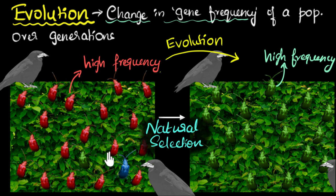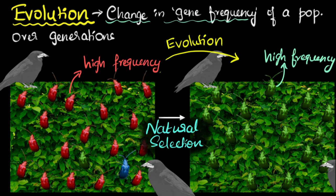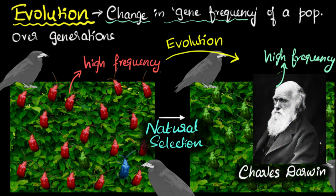It's called natural selection because this happened naturally. The moment you have an advantage, naturally you will end up creating more copies of yourself and increasing in number. So what you're seeing here is evolution by natural selection. This idea of natural selection was first proposed by a man called Charles Darwin, and because of his contribution, today we call him the father of evolutionary biology.